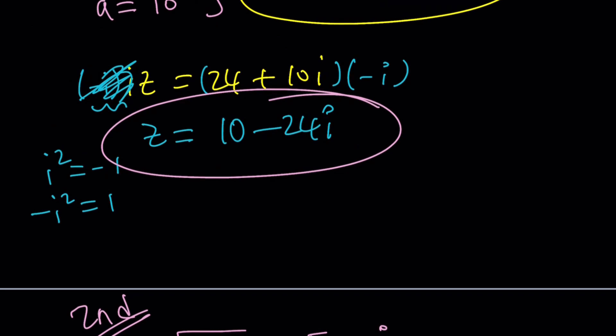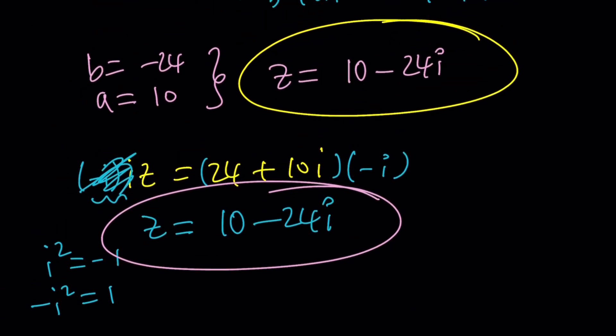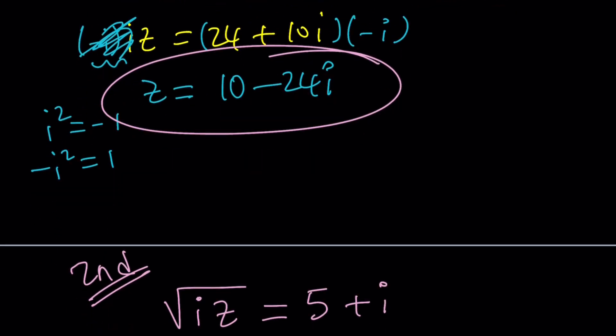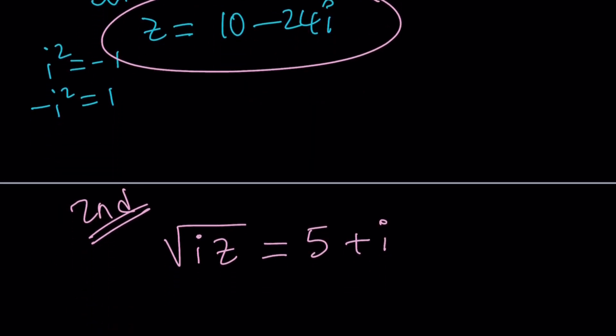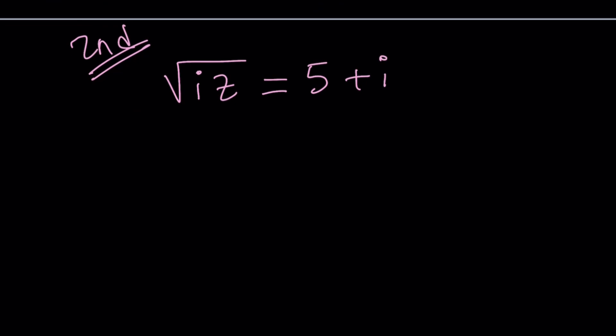What about the second method? Obviously, the second method this time is kind of weird because normally the first method is more painful. This is what I call second method. Now, instead of squaring both sides, one thing we haven't checked is does this solution actually satisfy the original problem? We kind of have to look at it. Anyways, let's do the second method first. Now, for the second method, I'm going to separate these two things. Square root of i times the square root of z equals 5 plus i. Now, why did I do this?